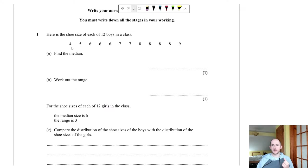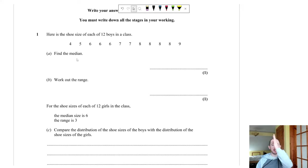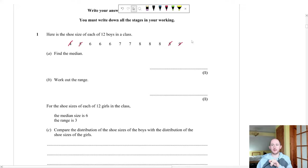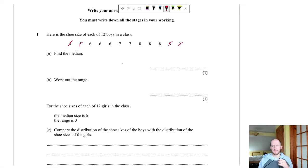Question 1 gives the shoe sizes of 12 boys — the data is already in order: 4, 5, 6, 7, 8, and 9. Part A asks for the median. The median is the middle value. Put the numbers in order, then cross off one from each side — one and one, two and two — making sure you cross off the same number from each side. Crossing off three from each side leaves two middle values: both sixes.